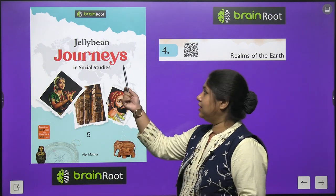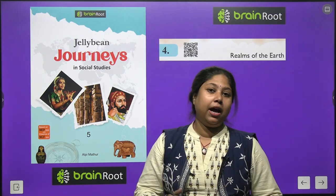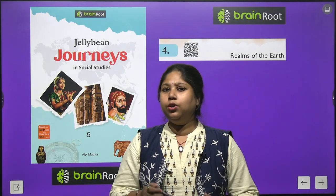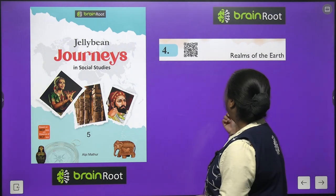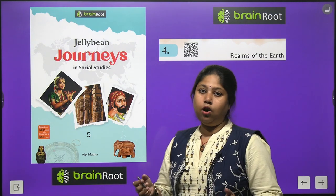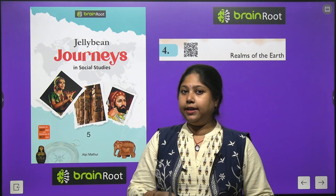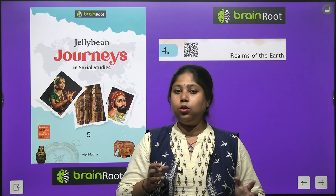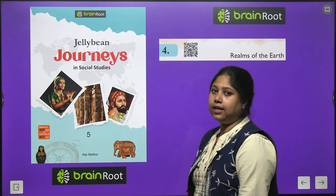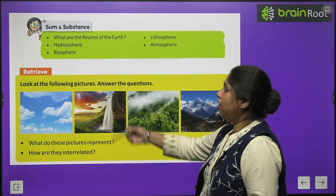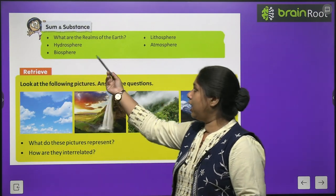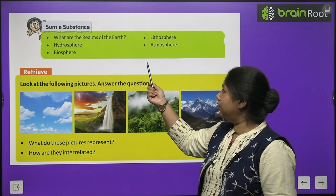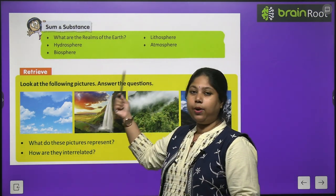Hi kids, welcome to your SST class. I am your teacher and mentor Ananya, and I am back with a new book — Jellybean Journeys in Social Studies by Brainroot Publications. Today we shall begin with chapter number 4: Realms of Earth. We will study the different realms of Earth — Biosphere, Lithosphere, Atmosphere, and Hydrosphere.